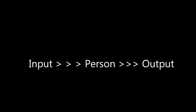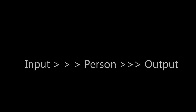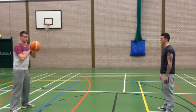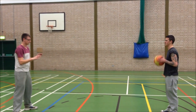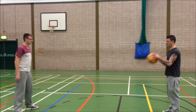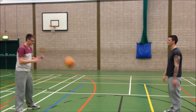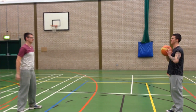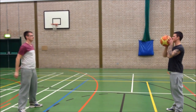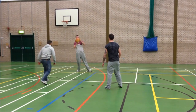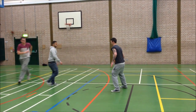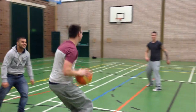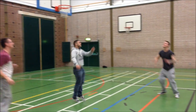Input is usually represented by a stimulus. In this instance, the ball is the stimulus. The basic throwing and catching scenario represents the black box model simply — the input is the ball, the person makes the process, and the output is the catch. However, for basketball in a game situation, this input of the ball exists amongst a multitude of other environmental stimuli, such as teammates, opponents, coaches and crowd, which may also occupy the attention of a basketball player.